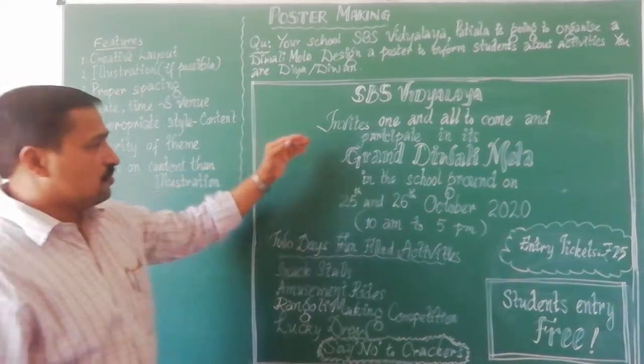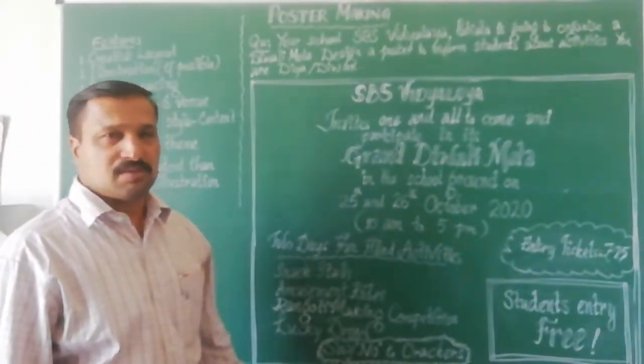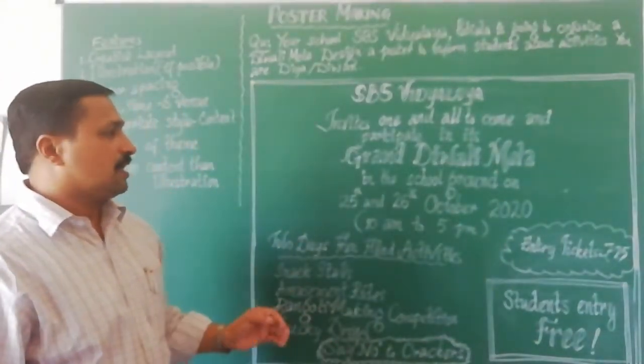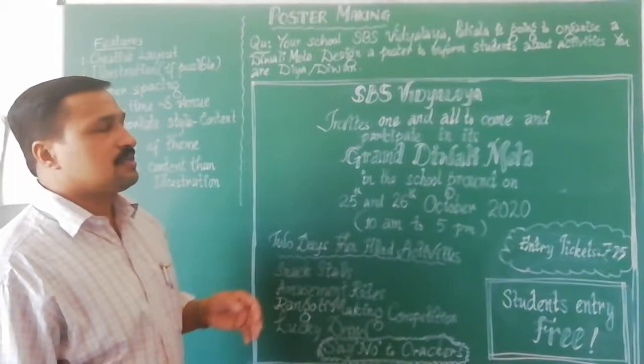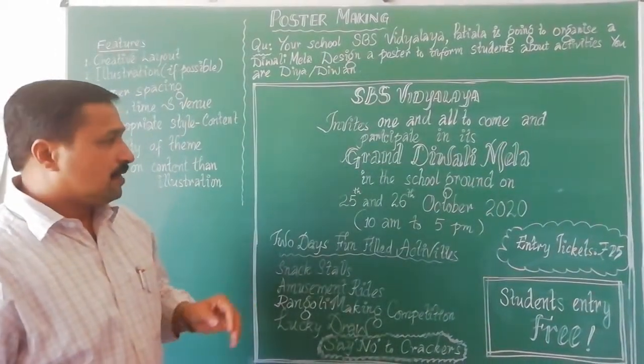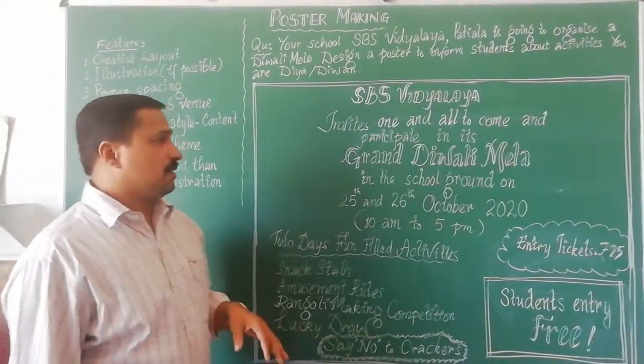The next feature is date, time, and venue. When a particular event is described, the date, time, and venue are to be mentioned clearly.